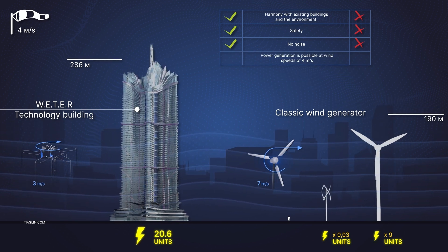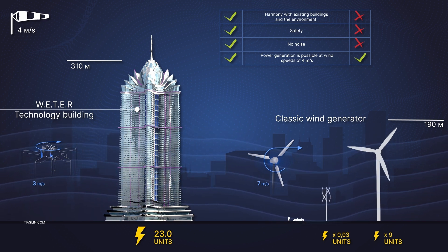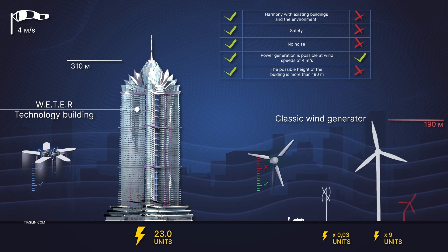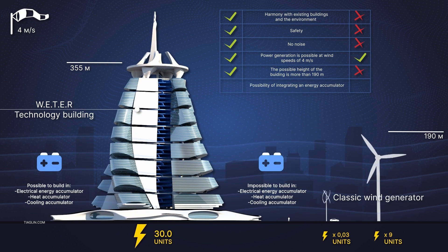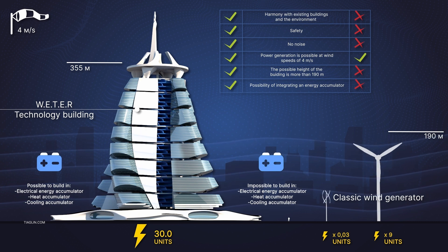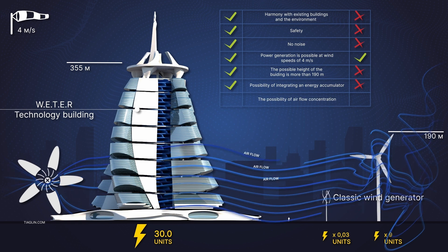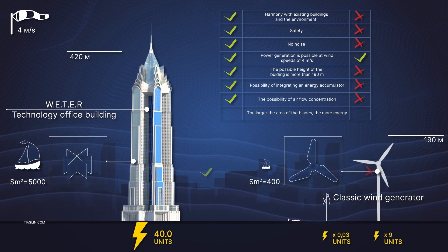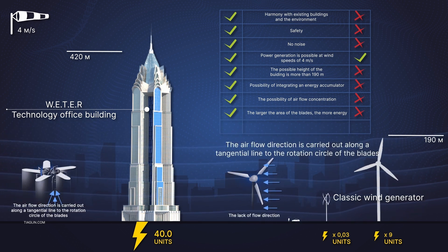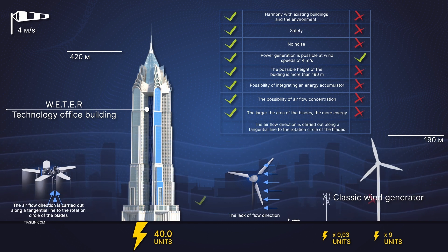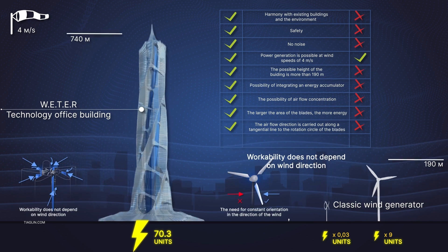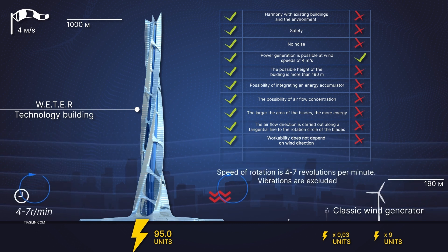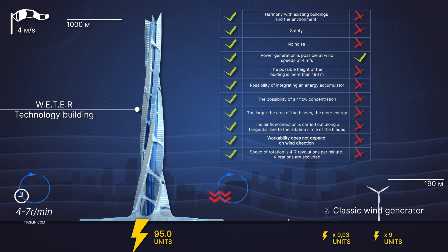Power can be generated at wind speeds of 4 meters per second. Possible building height of over 190 meters. Possibility to integrate various types of energy storage harvesters. Possibility of airflow concentration in contrast with classic wind farms. Large area of the blades means more energy. Direction of airflow at a tangent line to the rotation circle of the blades means more efficiency. Workability is independent of wind direction. Speed of rotation is 4 to 7 rpm. Vibrations are excluded.